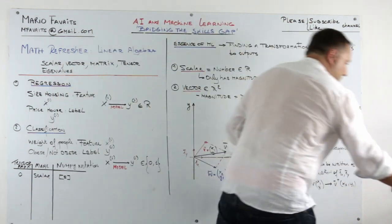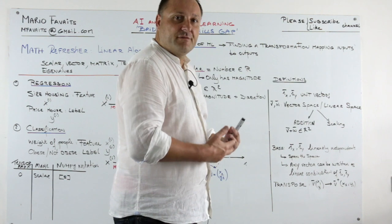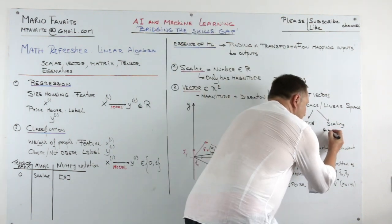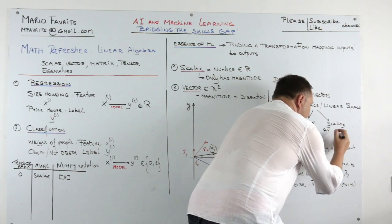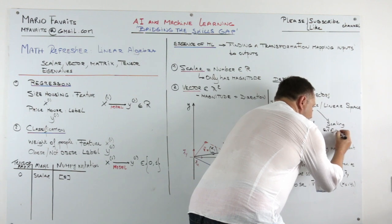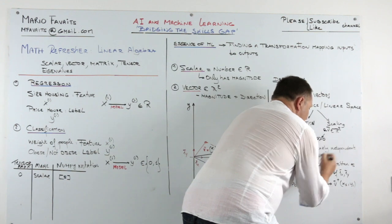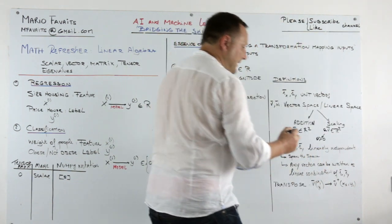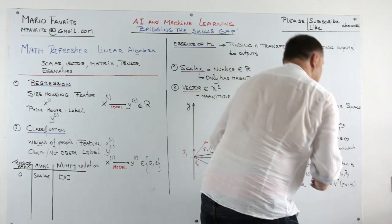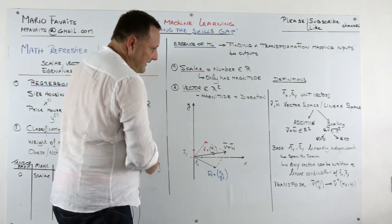The second characteristic for v and w to be a vector space or a linear space is scaling. Scaling means that a times v is an element of R squared. And if a is positive, it will be in the direction of v. And if a is negative, it will be in the other direction of v.